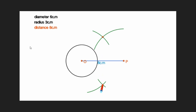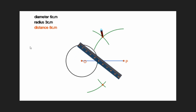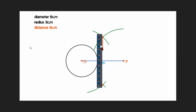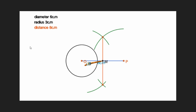We will now draw the two constructions. This is O and P. Draw the perpendicular bisector of OP. The midpoint of OP is called M.